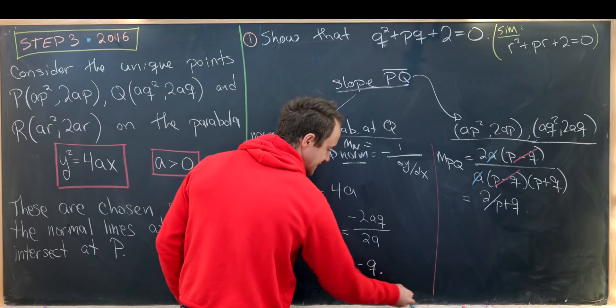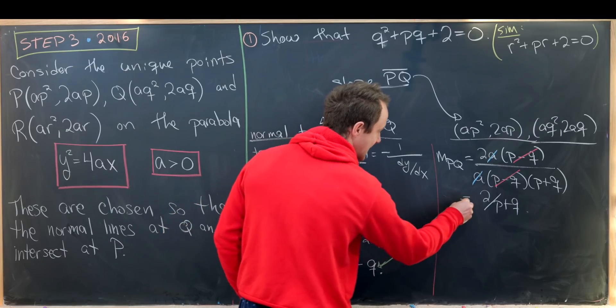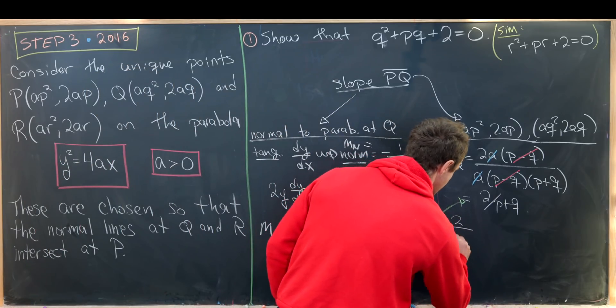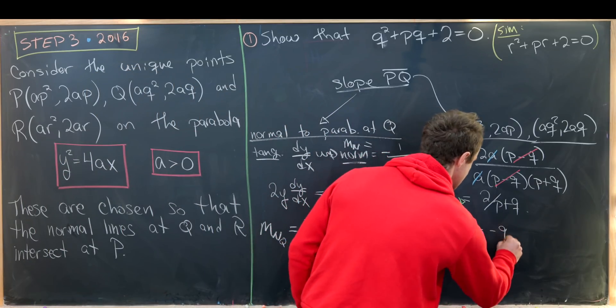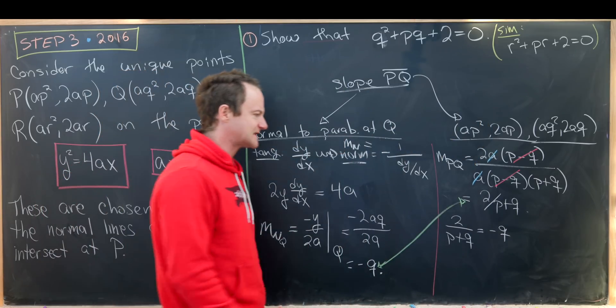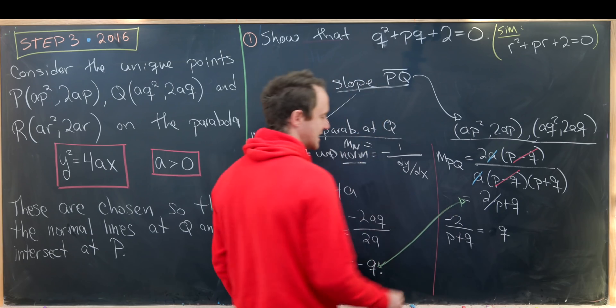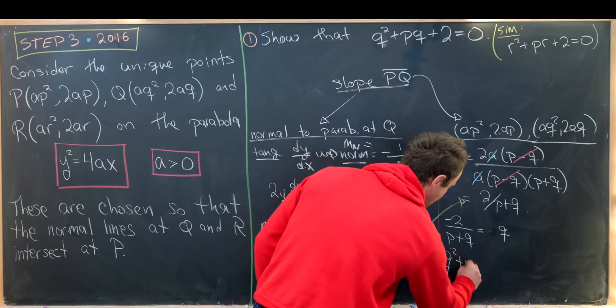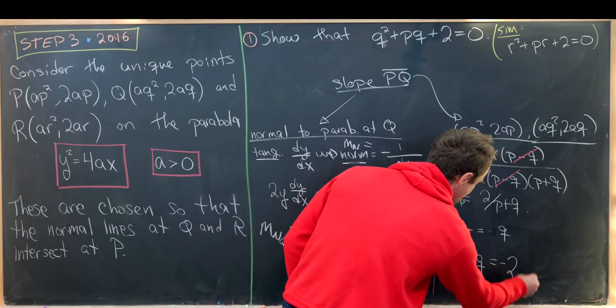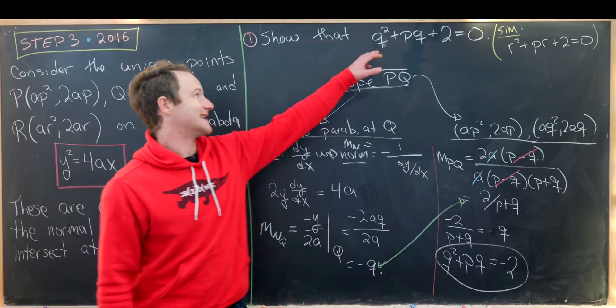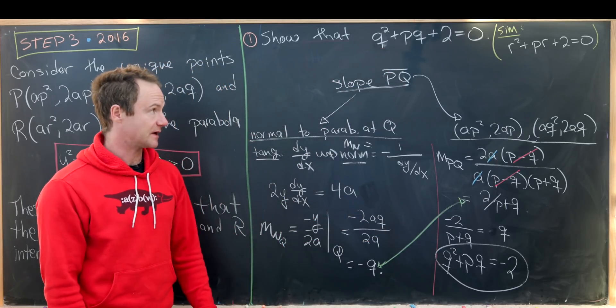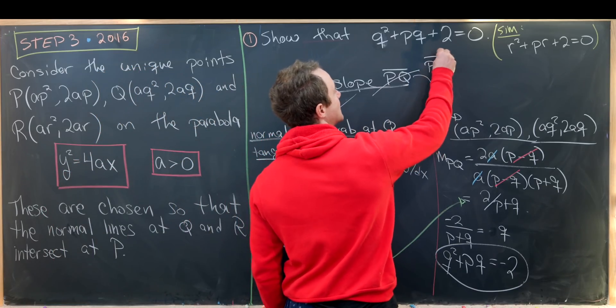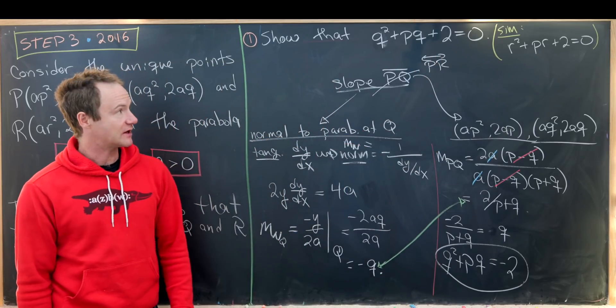Next up we'll equate these two objects because they have to be the same number given that they represent slopes of the same line. So we have 2/(P+Q) = -Q. I think our best bet is to move this minus sign from the right to the left and then we can cross multiply leaving us with Q² + PQ = -2. But notice that is exactly equivalent to the equation we wanted. Then we could play this same game with the slope of PR and we would have gotten that quadratic equation.